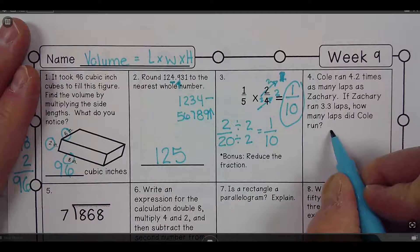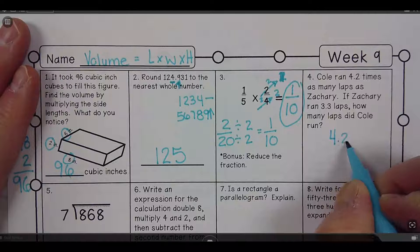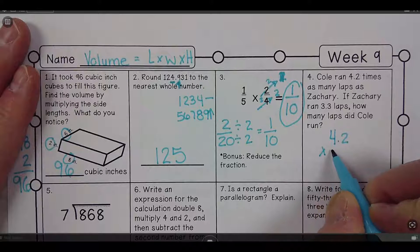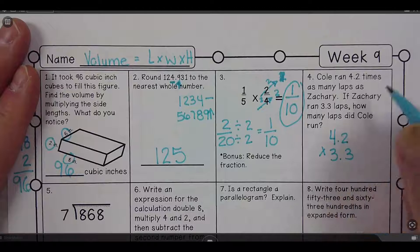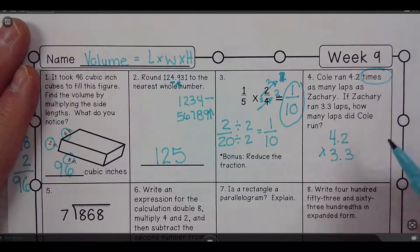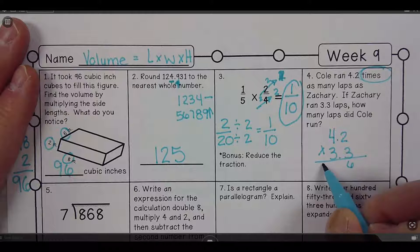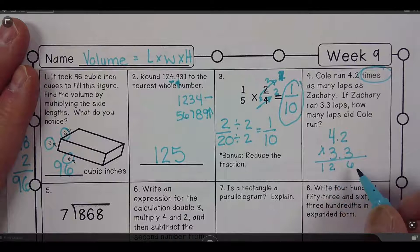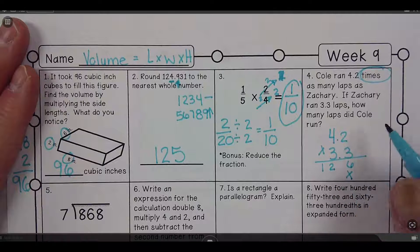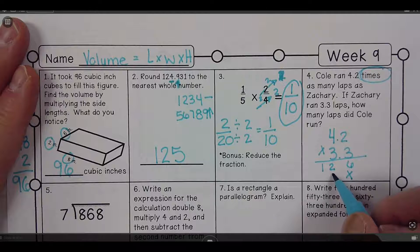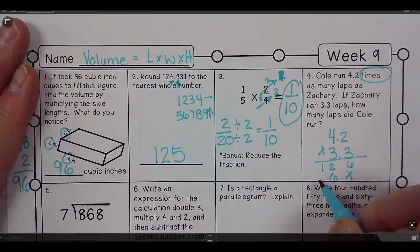Well, so we're gonna have 4.2 times 3.3 because it says times as many. 3 times 2 is 6. 3 times 4 is 12 and then I'm gonna save my spot. 3 times 2 is 6. 3 times 4 is 12.